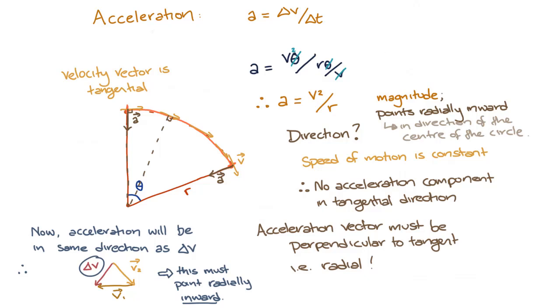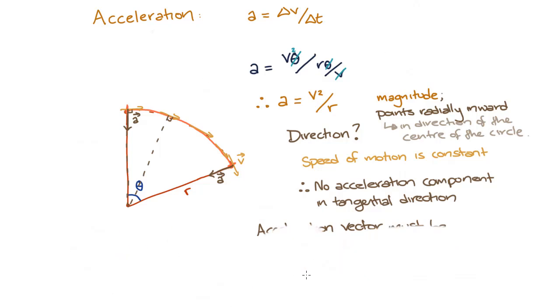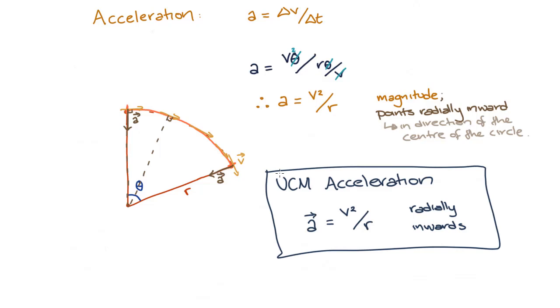And there we have it. The acceleration of an object undergoing uniform circular motion is v squared on r, and it points radially inwards. This is called the centripetal acceleration.